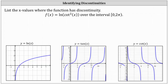We're asked to list the x values where the function has discontinuity. We are given f of x equals natural log of cotangent squared x over the interval from 0 to 2 pi, including 0 and not including 2 pi. For reference, I've included the graph of the basic natural log function on the left and the graph of the basic cotangent function on the right.